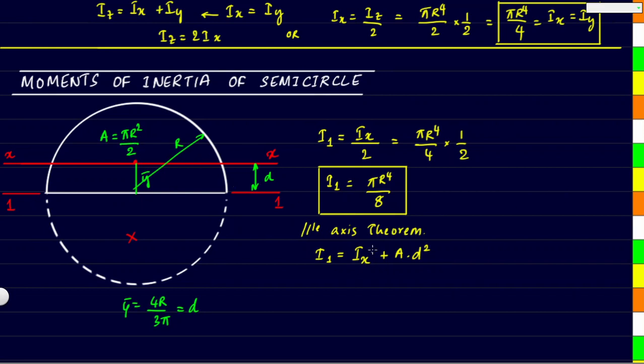Substituting both these values here we get Ix value as equal to I1 minus Ad². I1 we know is πr⁴/8 minus area is πr²/2 and d we are knowing here, let us substitute 4r/3π square of that.